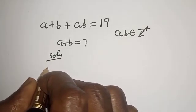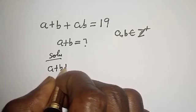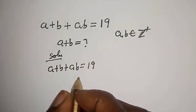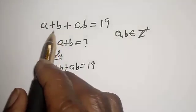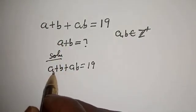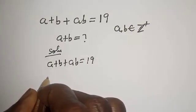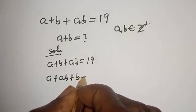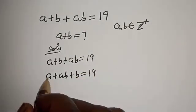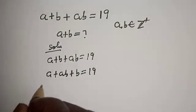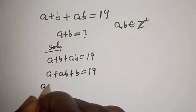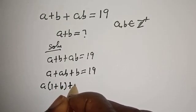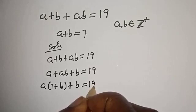We have the given equation A + B + AB = 19. We have A here and A here, so let's rearrange: A + AB + B = 19. Now we can factor A out: A(1 + B) + B = 19.